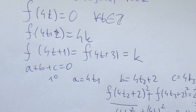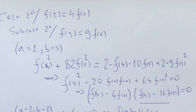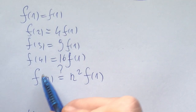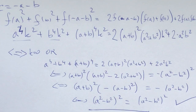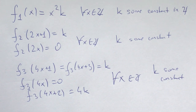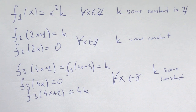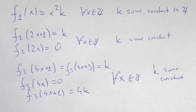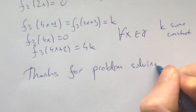We checked this for all cases and saw it worked. Then we solved the case f(3) = 9f(1), which inductively led to f(n) = n²·f(1). We checked this works for k ≠ 0 as well as k = 0. The three solution families are: (1) f(x) = k·x² for all integers x where k is a constant integer; (2) f(odds) = k and f(evens) = 0 where k is a constant integer; (3) f(odds) = k, f(multiples of 4) = 0, and f(evens not divisible by 4) = 4k where k is a constant integer. Thanks for problem solving!